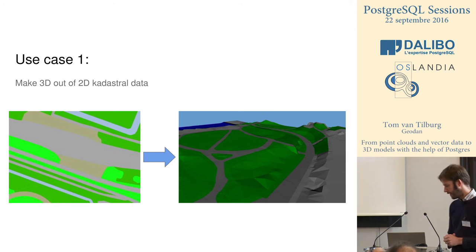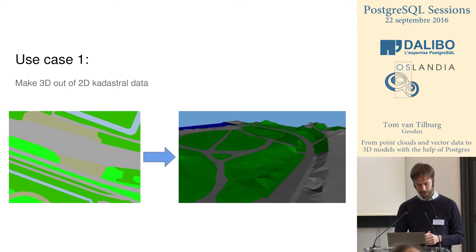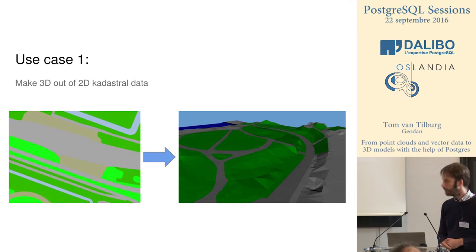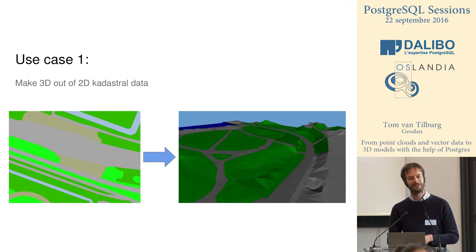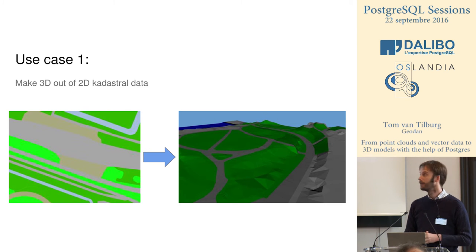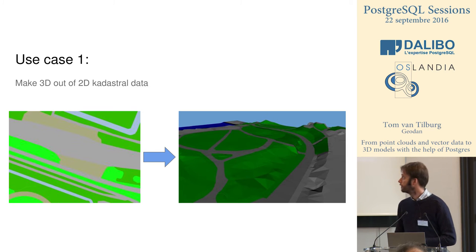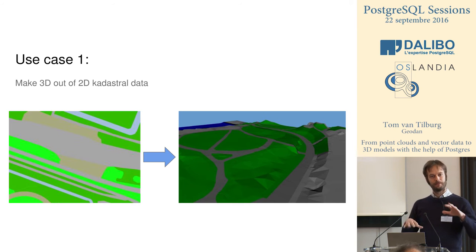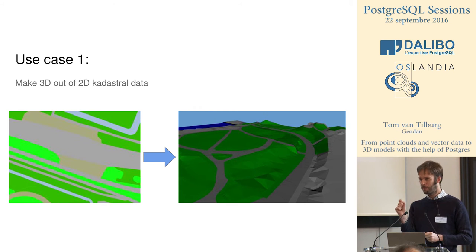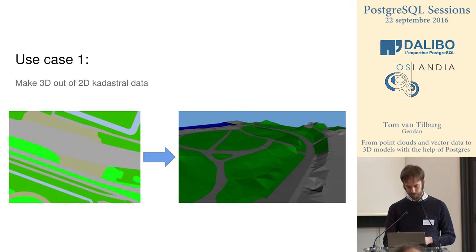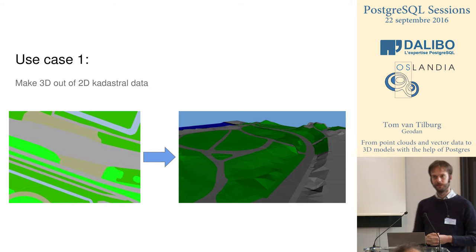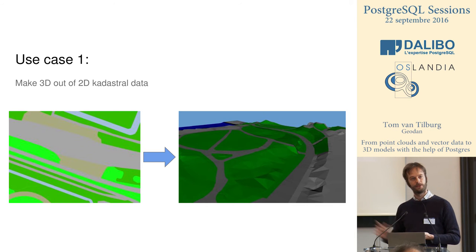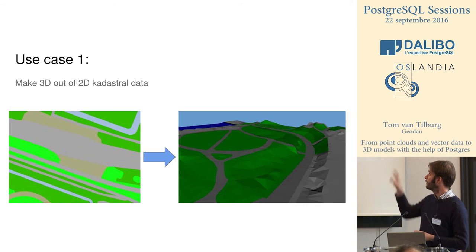So we started using our 2D datasets together with the point cloud dataset. What you see on the left picture is the cadastral dataset: gray is roads, green is patches of grass, blue is water, and there is a little bit of relief. The Netherlands doesn't have mountains, but we do have dikes, and our goal was to get these small relief features into the model. So you go from a flat surface to a triangulated terrain area, and on top of that we want to have buildings.